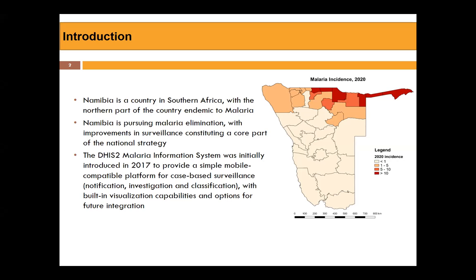Namibia is a country in the southern part of Africa, with the northern part being endemic to malaria. Our aim is to eliminate malaria from Namibia, and for that we need improved surveillance, which is a core part of our national strategy. The DHIS2 malaria information system was initially introduced in 2017, although before that we had a mainstream system that collected information from other diseases but could not collect all the information needed to address all the indicators — so DHIS2 was introduced for its built-in visualization capability and option for future integration.